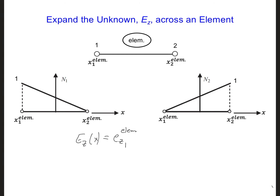And here I'm using lowercase Ez. I'll explain this in a minute. And we're going to multiply this by the interpolation function for that node, which is N1, and that changes with x.